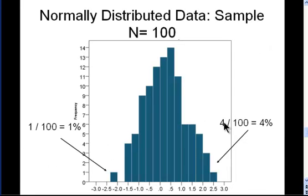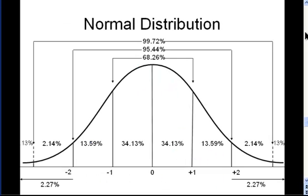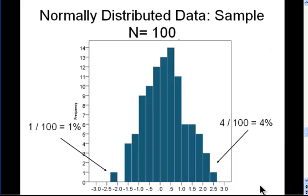What I've done here is redone the frequency diagram with 100 observations created by the program. This is within sampling variations of a normal distribution. We observe 1% and 4% in the tails. Based on normal distribution theory, we expect 2.3% on either side.